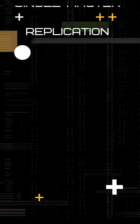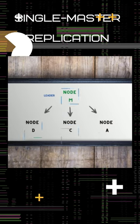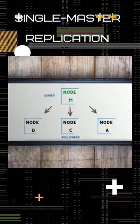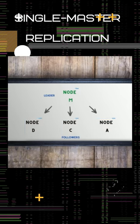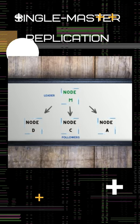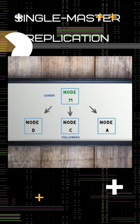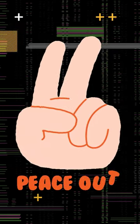It works like this: the leader node receives an update and propagates the update to the other nodes, so you can easily maintain a consistent view of the data on all the replicas.